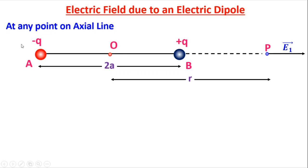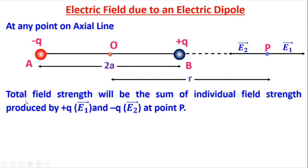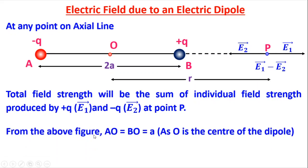At point P, due to charge plus q, the electric field is E1 along the right side direction. Due to charge minus q, the field is E2 along the left direction. The total field strength will be the sum of individual field strengths produced by plus q and minus q. Since E1 is directed to the right and E2 to the left, they are in opposite directions, so the total field E equals E1 minus E2.